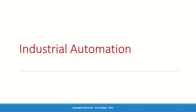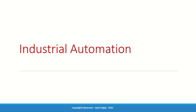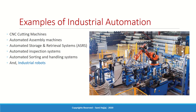Now that we've talked about automation, let's focus on industrial or manufacturing automation — the two words are interchangeable in this course. Industrial automation includes: CNC machines, cutting machines, machining equipment, automated assembly lines, assembly equipment, automated storage and retrieval systems, automated inspection systems, sorters or handling equipment, and of course industrial robots. These are all examples of industrial automation equipment and machinery.